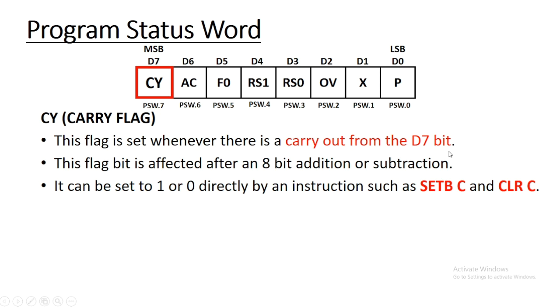This flag is set whenever there is a carry out from the D7 bit. When ALU performs addition or subtraction operation, and during the operation an extra bit is generated which spills out of the byte of any register or accumulator, this flag is generated. In similar words, if a 9th bit is generated in addition, this flag is set.